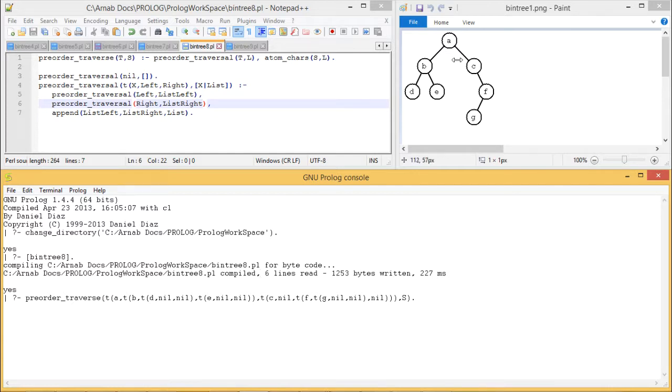So here this tree has been represented in this form. The same tree has been represented in this form. So now if I execute the same, I'm getting this output like this A, B, D, E and then C, F, G. So whatever we expected, the output has come accordingly.